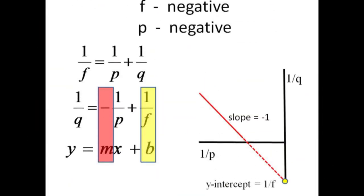Construct a graph of 1 over q versus 1 over p for the diverging lens and expect a slope of negative 1 and a negative y-intercept with an inverse equal to the negative focal length of the diverging lens.